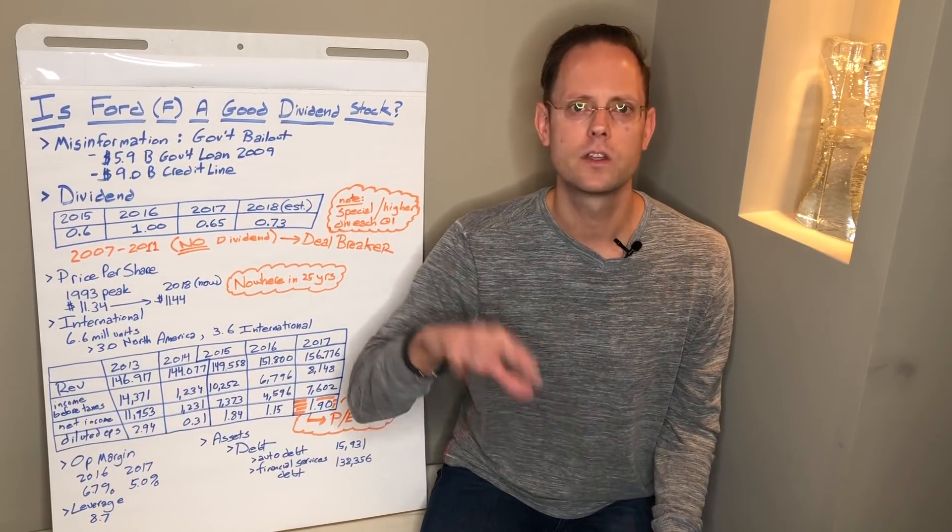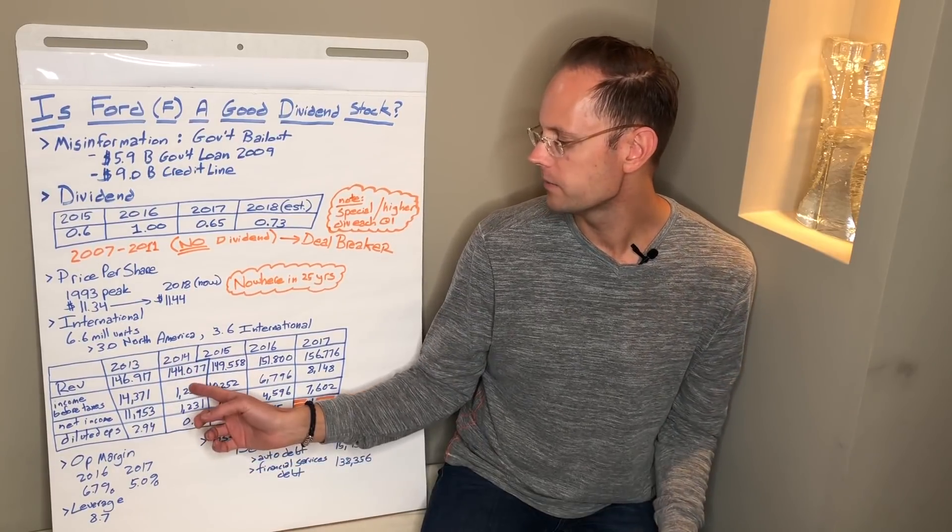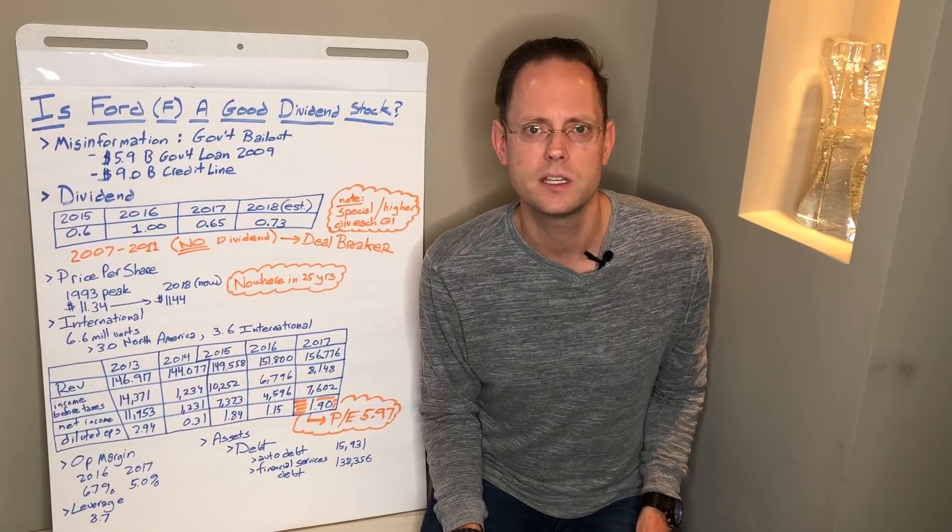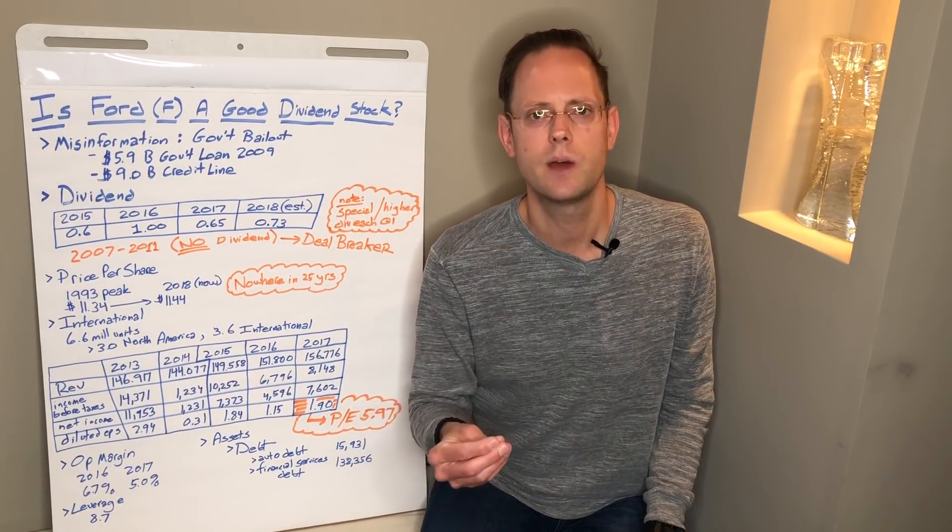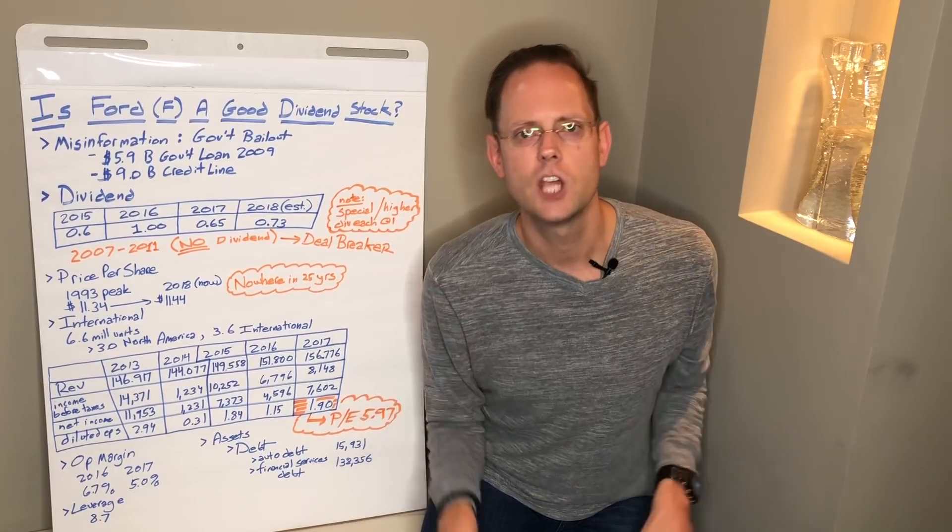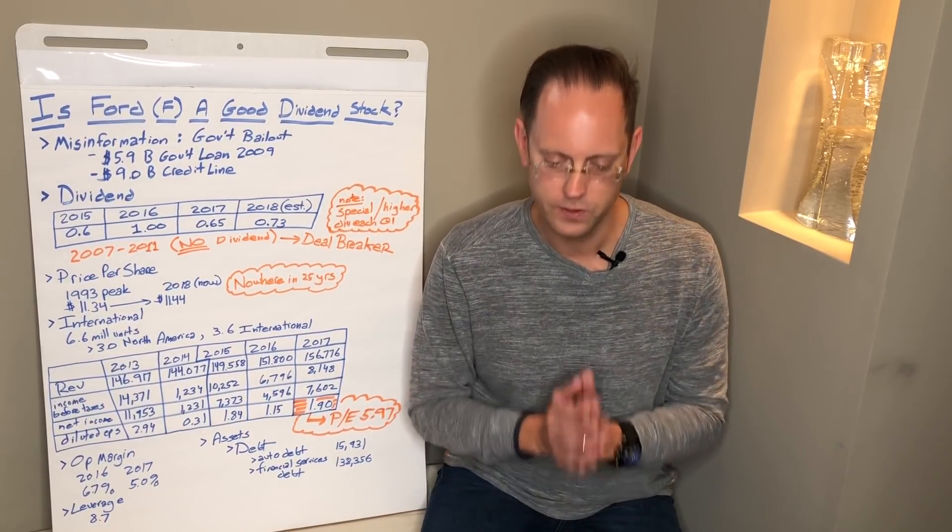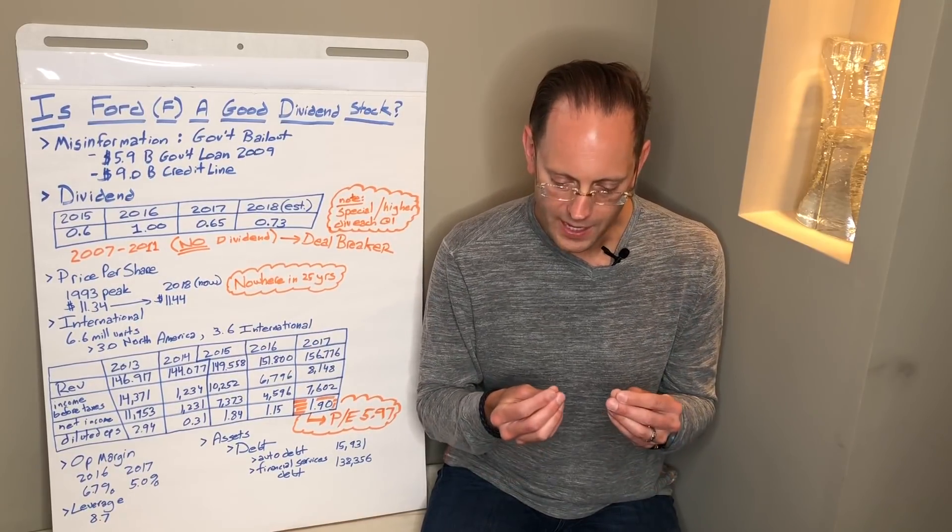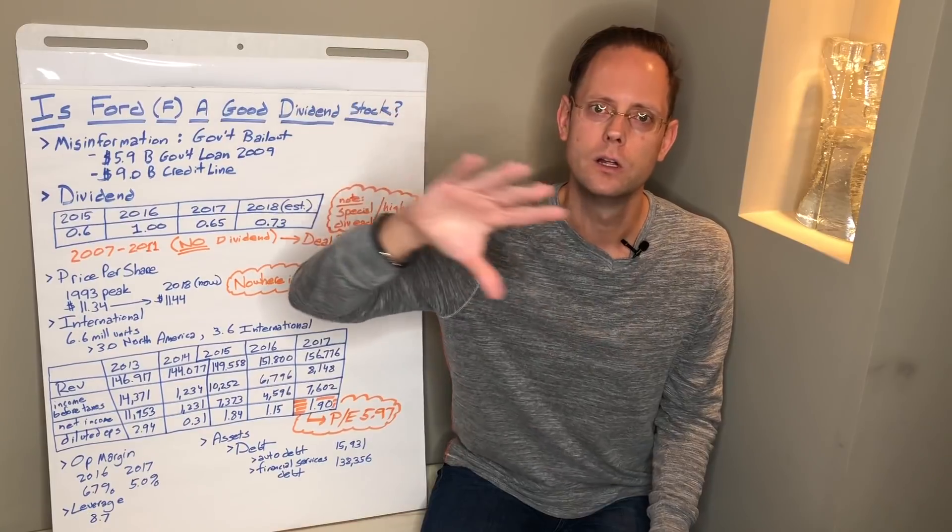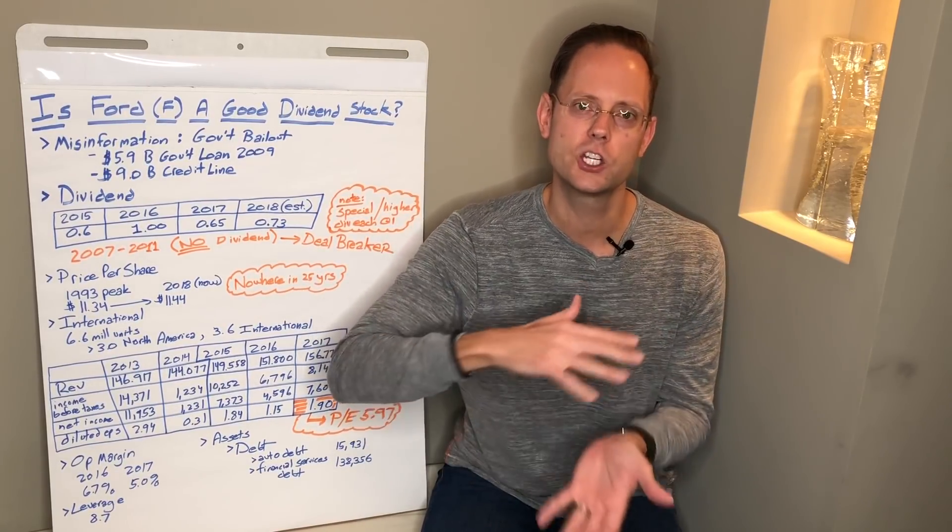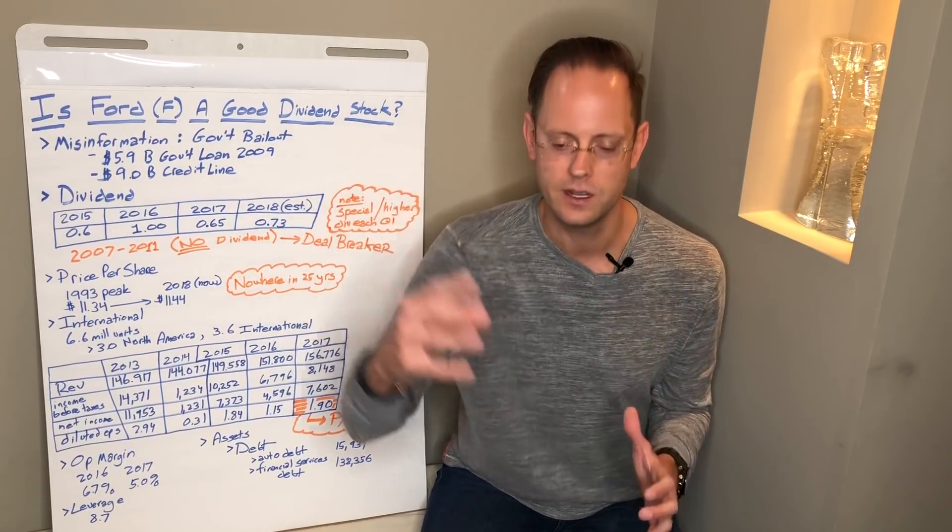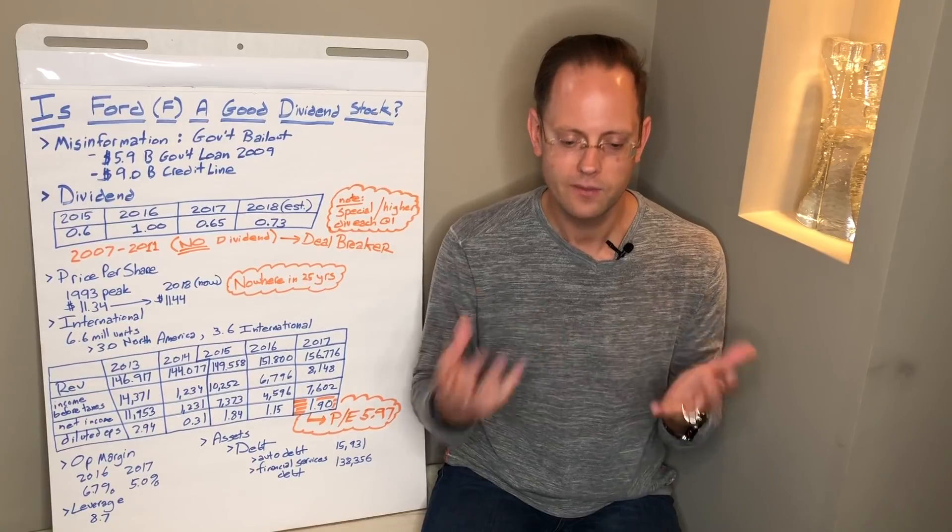Whether a business is purchasing a truck or a van from Ford for their business, whether an individual is purchasing an auto, those types of decisions can generally be delayed. If it's a bad economy, one can delay their purchase. If it's a good economy like it is now, revenue is going to be up. They're going to be increasing the top line because people are buying cars and businesses are buying trucks. Income before taxes is kind of all over the map. 14 billion in 2013 goes down to 1 billion in 14, up to 8 billion in 2017.